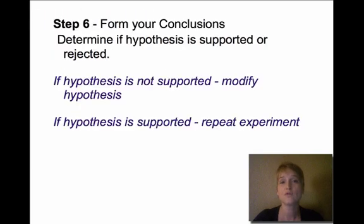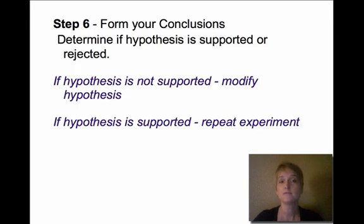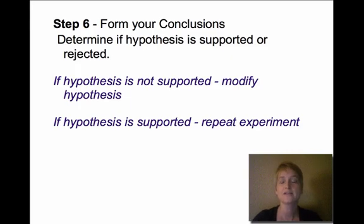Step six is to form your conclusions. Here you determine if your hypothesis is supported or rejected. If your hypothesis is not supported, that doesn't mean the experiment is a failure — it means you need to modify your hypothesis and try again. It's really a trial and error process. If the hypothesis is supported, we never say it proves your hypothesis is right; we say it's supported, and you or other people would repeat the experiment to see if they can come up with the same results.